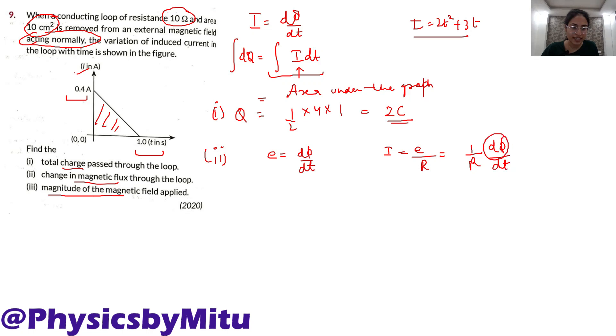And this is 1 by r dΦ by dt. Hume flux find karna hai, dΦ find karna hai. So dΦ is i dt into r. Again, integration. Achha, ye kya hai? i dt.